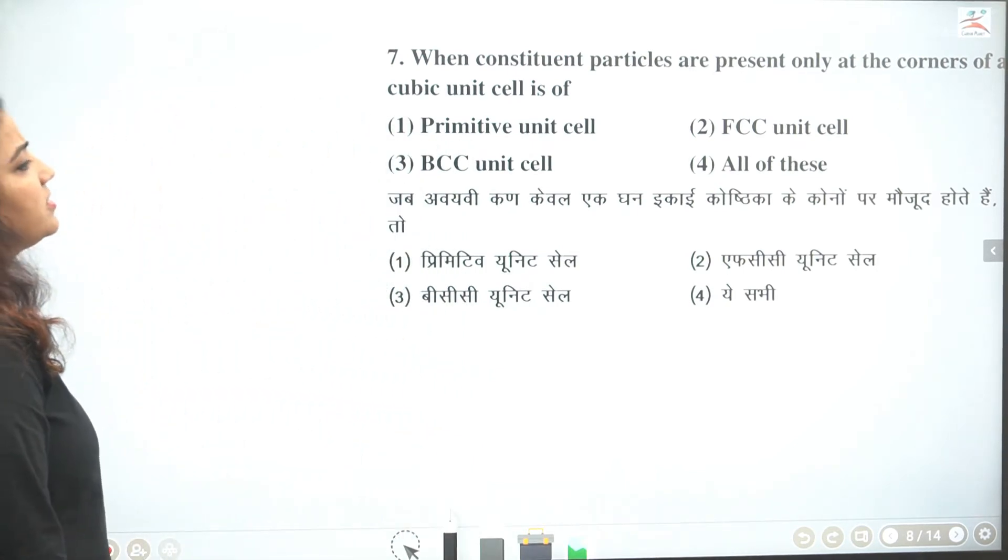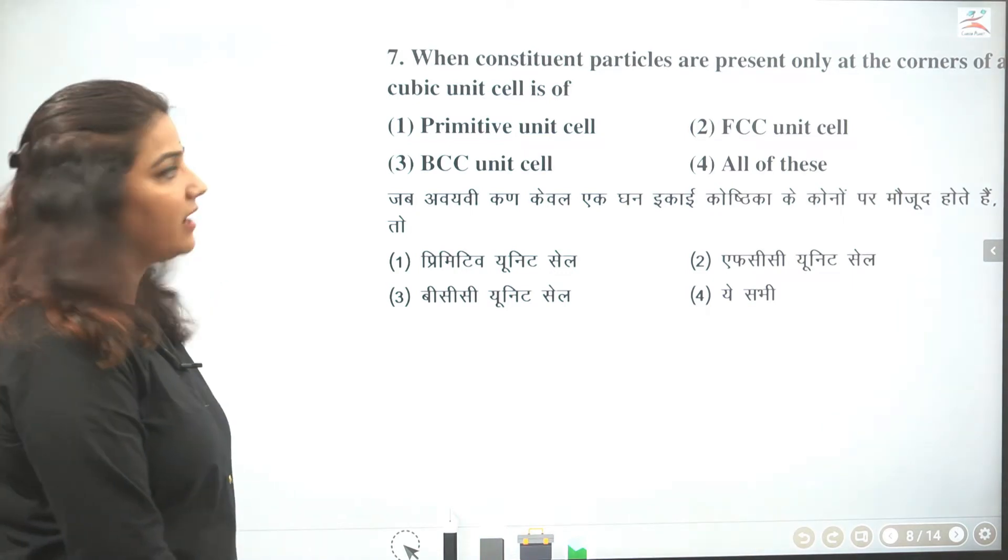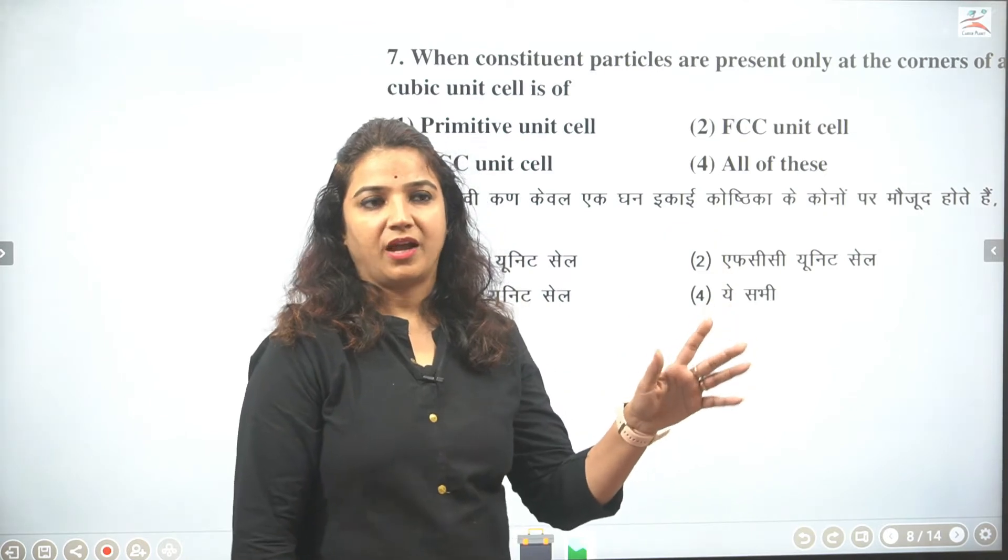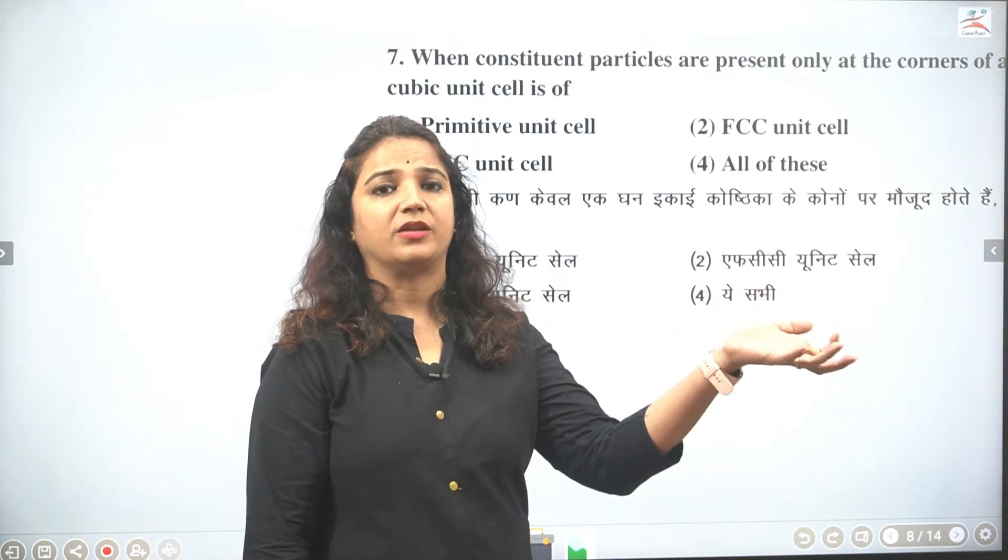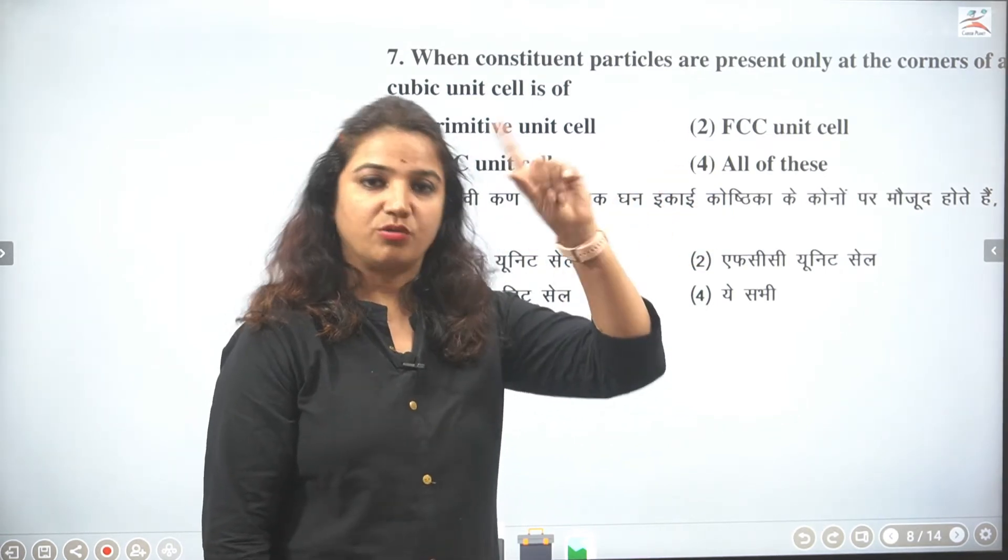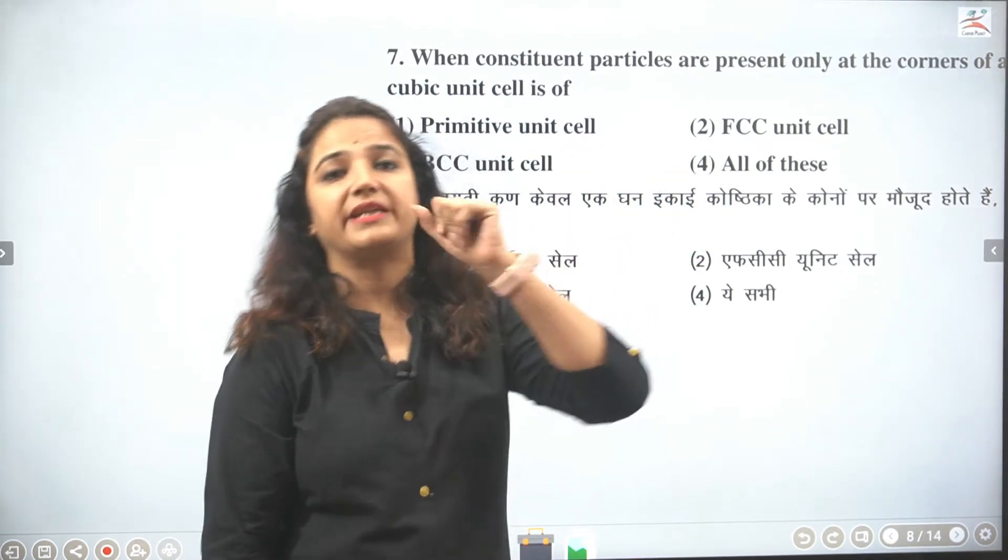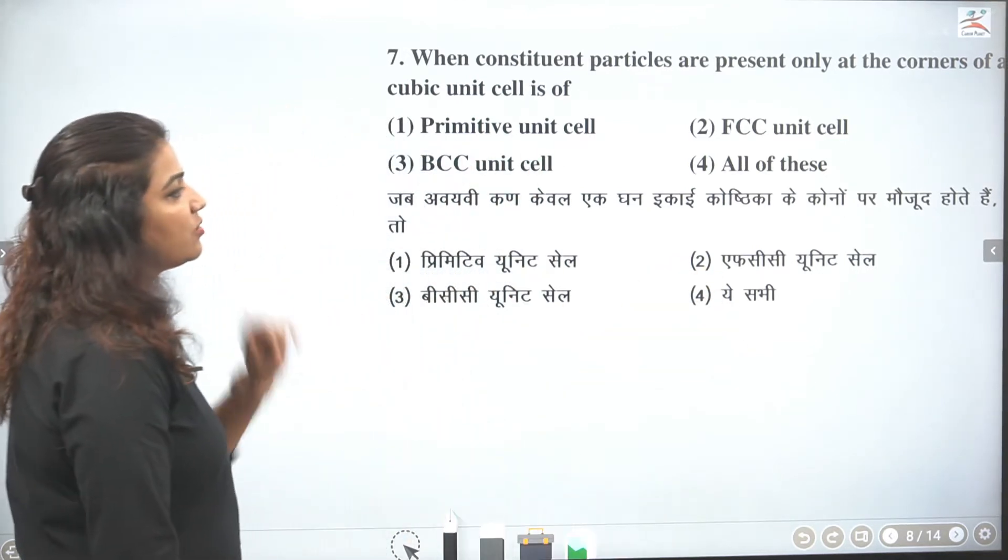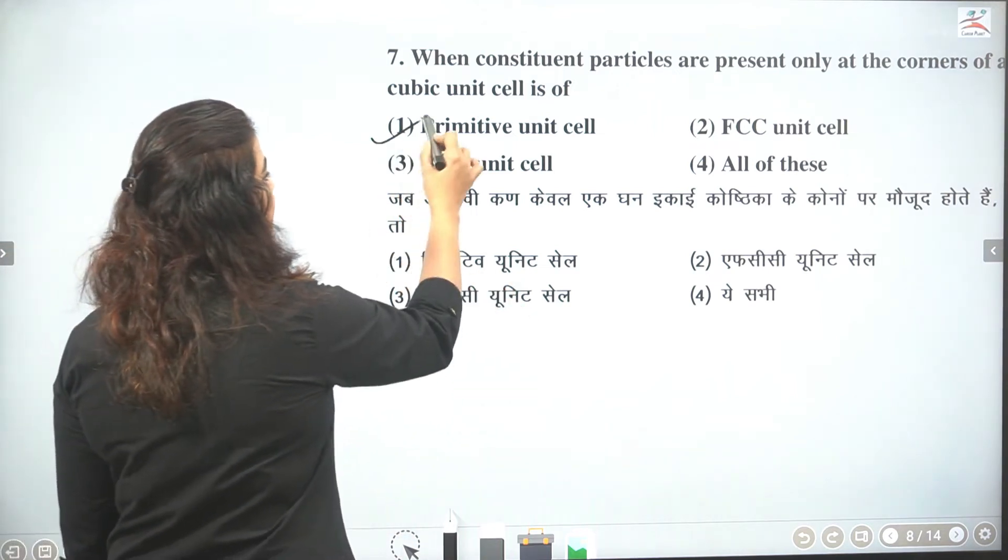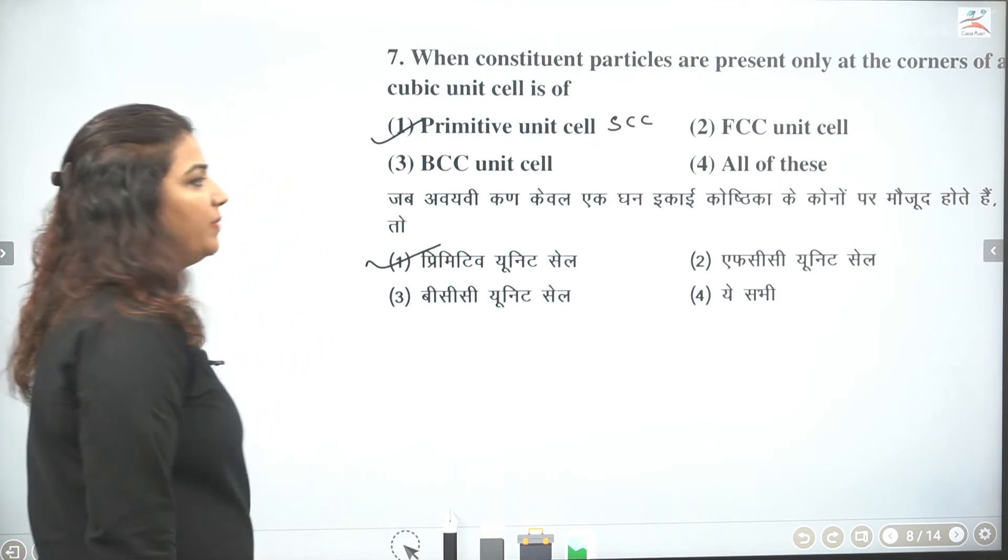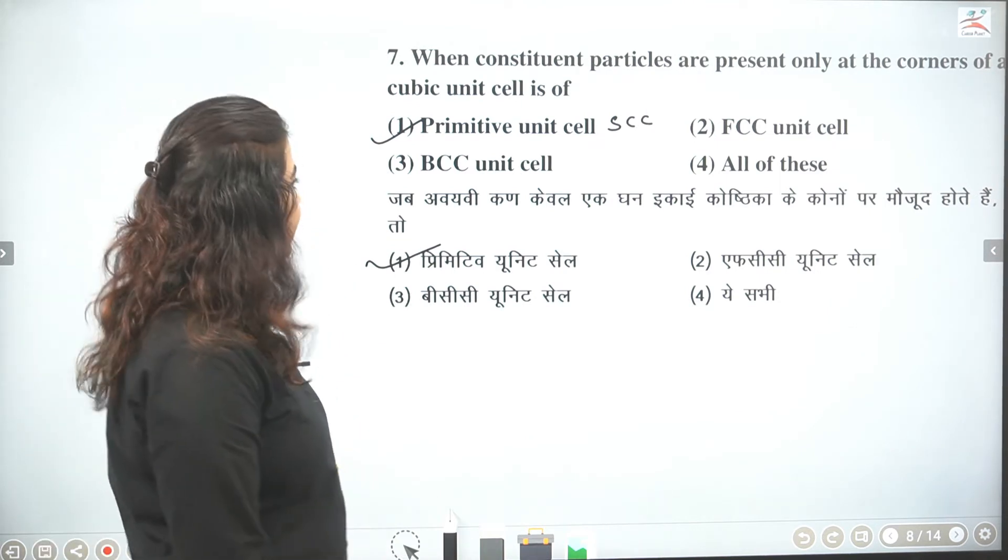Next students. When constituent particles are present only at corner of cubic unit cell. Jab particle sirf corner pe ho. Aapka BCC banaoge toh bhi toh corner pe banate ho. Toh BCC banate ho toh corner pe banate ho and body ke center pe rakhte ho. FCC banega toh corner pe rakhte ho lekin saath saath mein face center pe rakhte ho. Lekin sirf corner ki baat karo. Toh phir hamara answer hoga primitive unit cell. Simple unit cell. Isse hum SCC bhi bol sakte hai na. Simple cubic cell. Toh correct answer is first.